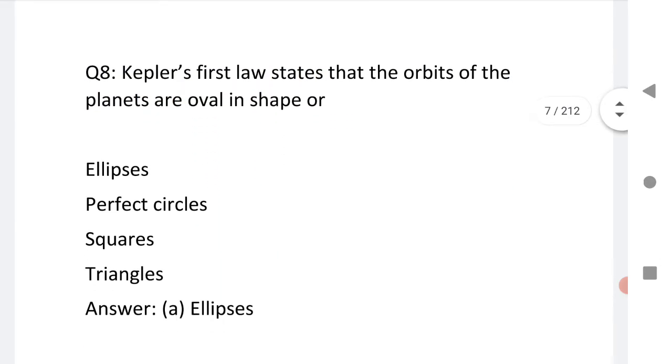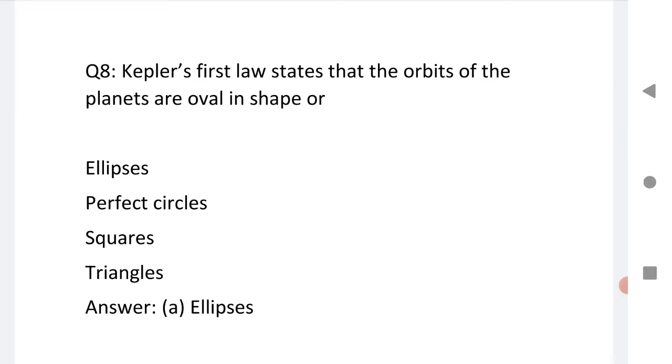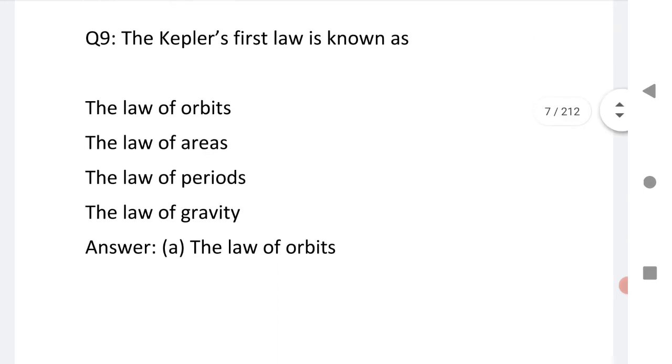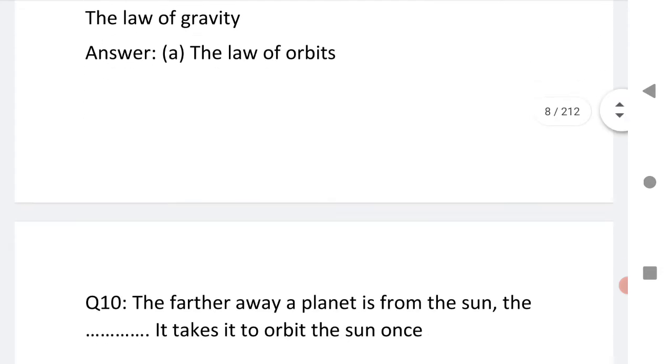Eighth question, very important question: Kepler's first law states the orbit of the planets are oval in shape or ellipses. This is very important MCQ. Kepler's first law is also known as the law of orbit.